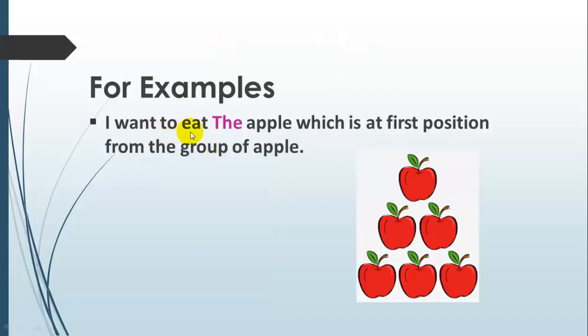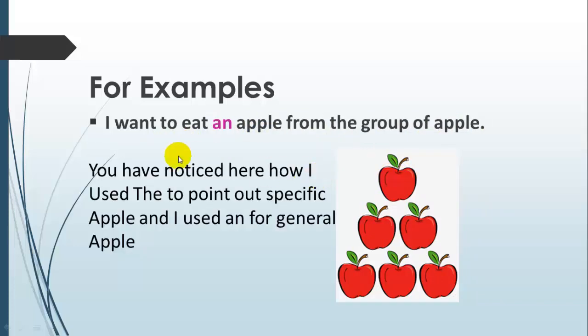For example, I want to eat the apple which is at first position from the group of apples. Another example: I want to eat an apple from the group of apples. You have noticed here how I use the to point out a specific apple and I use an for a general apple.